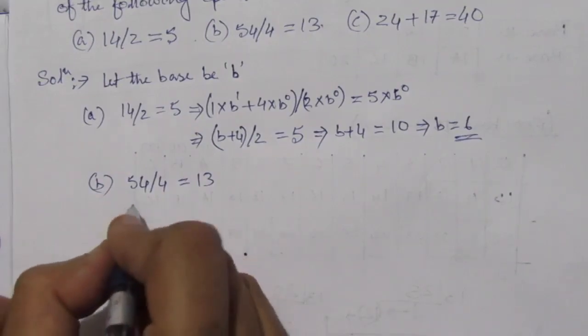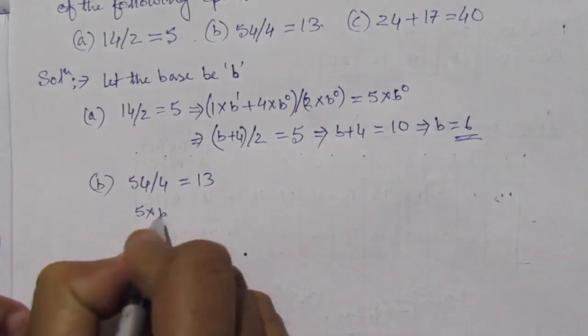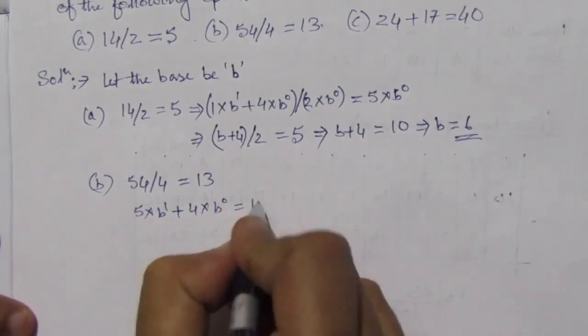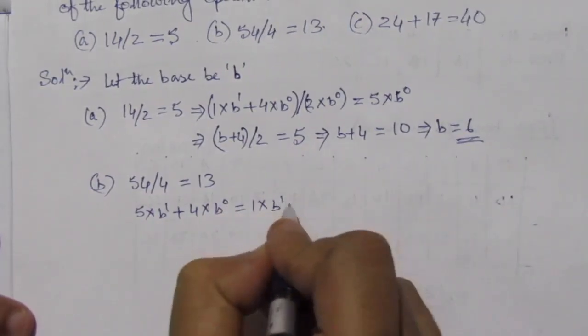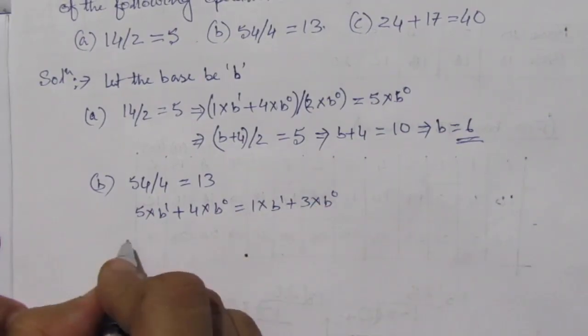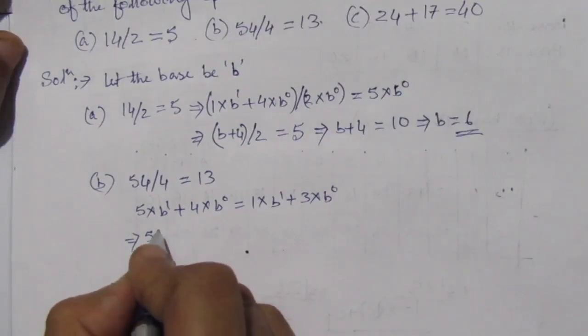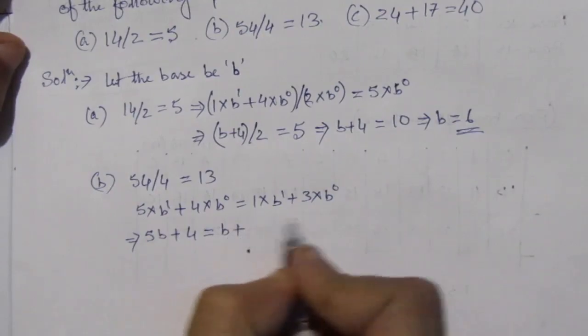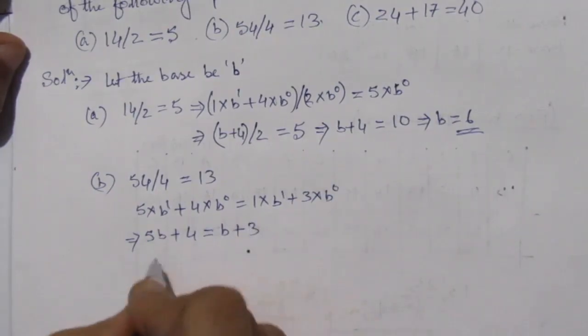Let us rewrite it as 5 × b^1 + 4 × b^0 equal to 1 × b^1 + 3 × b^0. This implies 5b + 4 equal to b + 3.